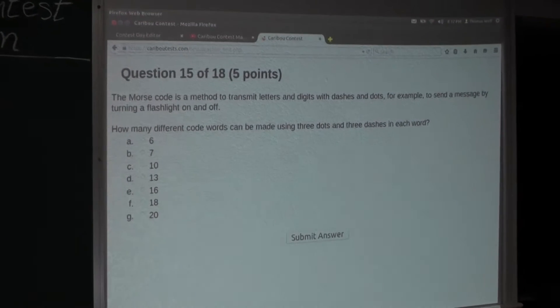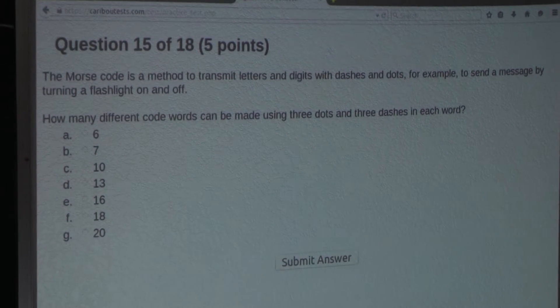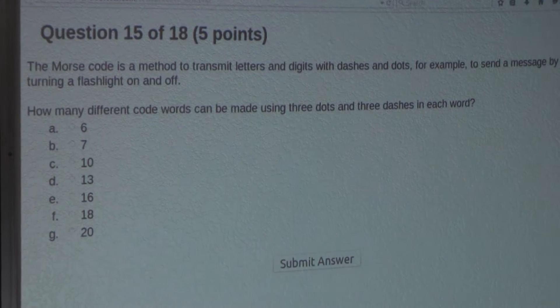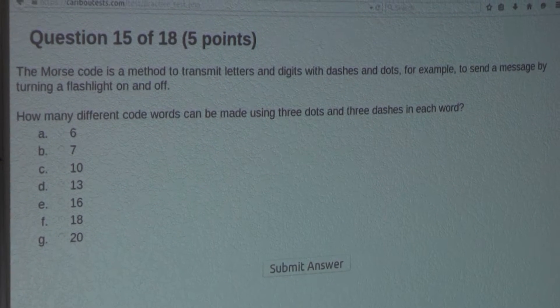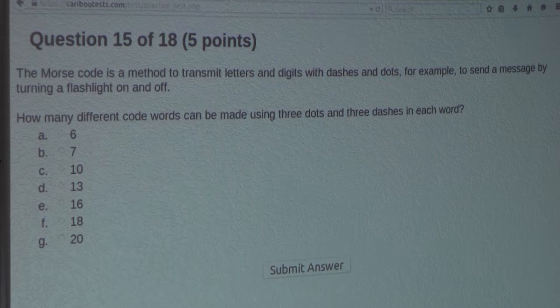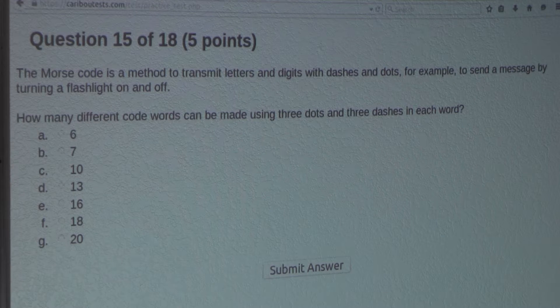So the question is: The Morse code is a method to transmit letters and digits with dashes and dots, for example, to send a message by turning a flashlight on and off. How many different code words can be made using three dots and three dashes in each word?